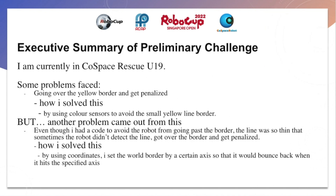Some problems I faced during the preliminary challenge were that my robot kept going over the yellow border and getting penalised. I solved this by using colour sensors to avoid the yellow line.